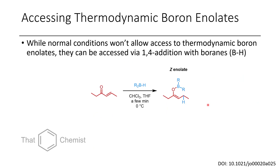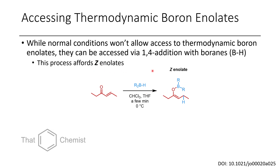When you prepare these enolates, you don't form thermodynamic boron enolates — you can only access the kinetic enolates. If you want to access thermodynamic boron enolates with the alkene in the more substituted position, it's necessary to get a little bit clever. As we talked about with 1,4-addition of nucleophiles to Michael acceptors, it's possible to use a borane — a BH compound — as a hydride nucleophile, and then the boron ends up trapping the oxygen as the boron enolate, giving Z-enolates with good selectivity.